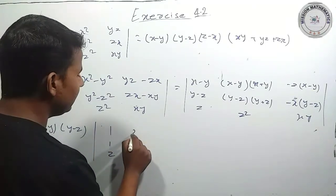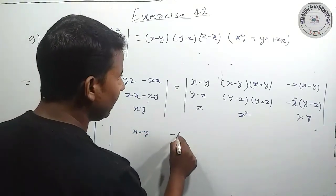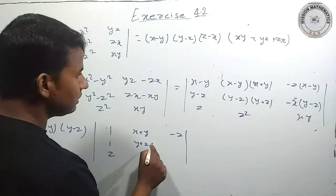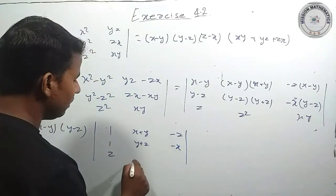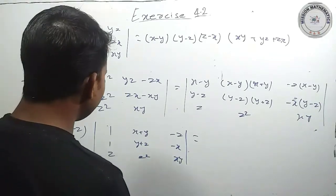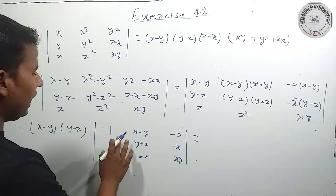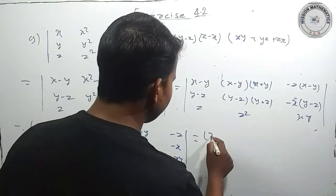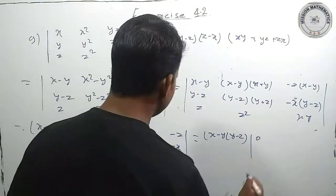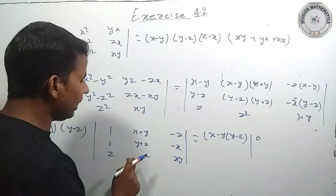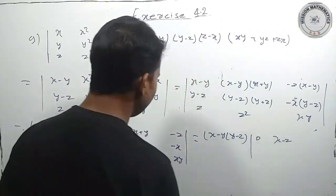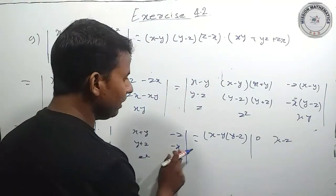z और फिर यहां x plus y and minus z, और फिर यहां y plus z, और यह minus x. यह z², xy रह जाएगा। फिर इसमें R1 minus R2 करेंगे, तो x minus y into y minus z को रहने देंगे। यहां से 0 हो जाएगा, y से y cancel हो जाएगा, और यह x minus z हो जाएगा।